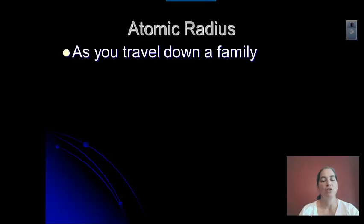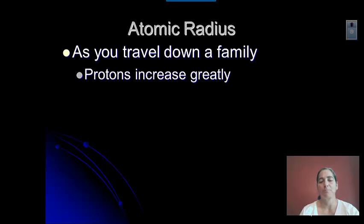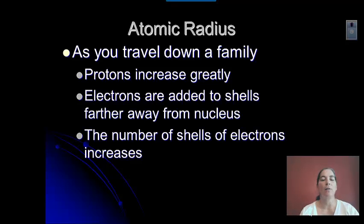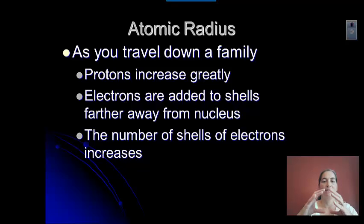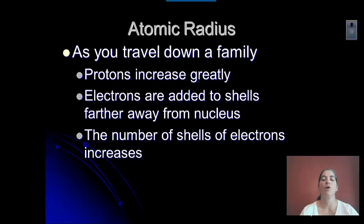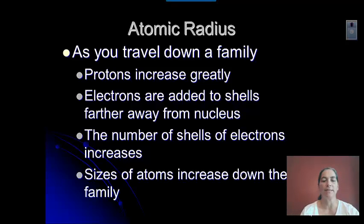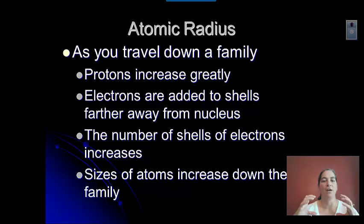As you go down a family, the protons jump up, and we're adding electrons in shells farther and farther away from the nucleus. Each time we add a shell, the size of that atom increases. So as the number of shells increases, obviously the size of the atom increases — the atom gets much larger as you go down a family.